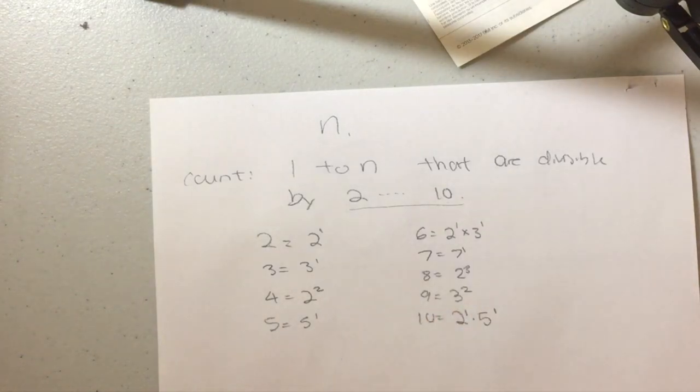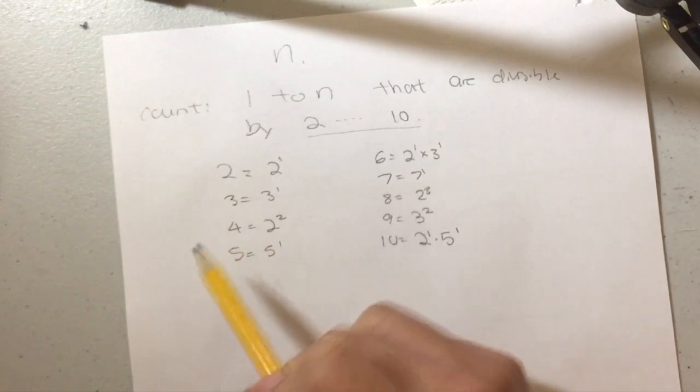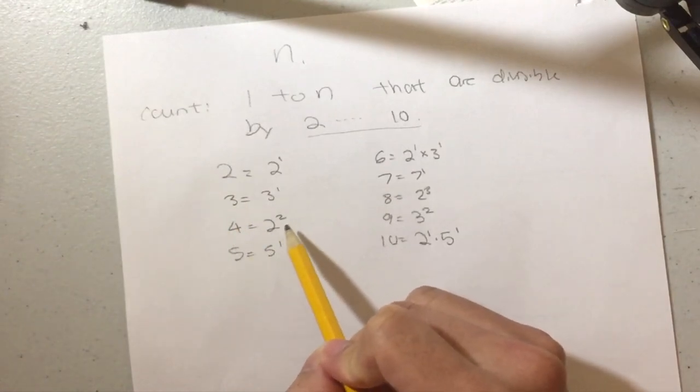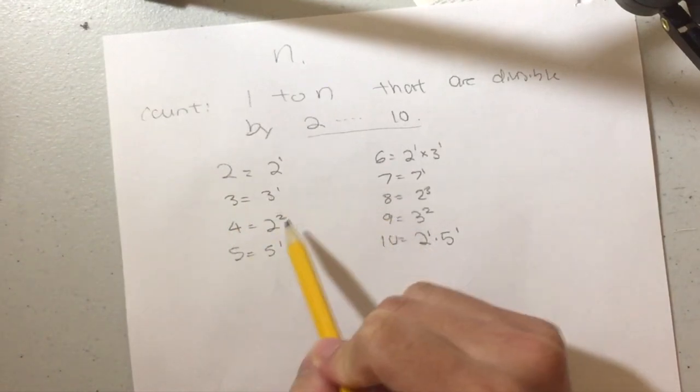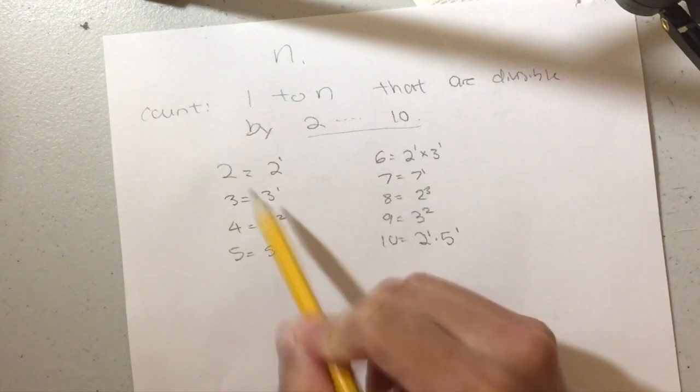And 10 = 2^1 × 5^1. Okay, so now once you have all these, it's time to look at the largest exponent and then pick the ones with the largest exponent to multiply to find our common multiple.